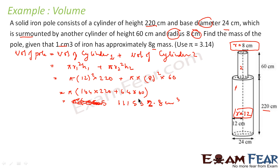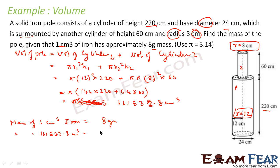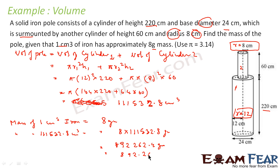Mass of 1 cm³ of iron = 8 grams. Therefore, mass of 111532.8 cm³ of iron = 8 × 111532.8 grams = 892262.4 grams. Converting to kilograms by dividing by 1000, the total mass is approximately 892.262 kg.